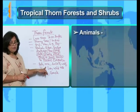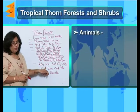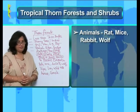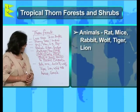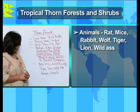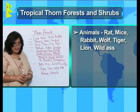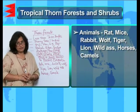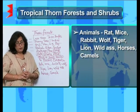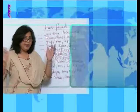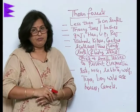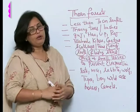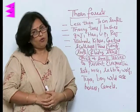The animals which are found in the thorn forest are rats, mice, rabbits, wolf, tiger, lion, wild ass, horses, and camels. So there is plenty of animal life found in the thorn forests of India.